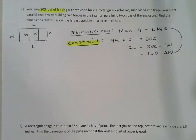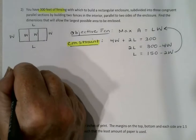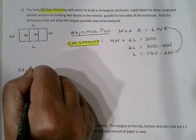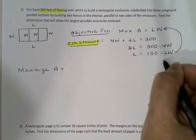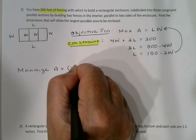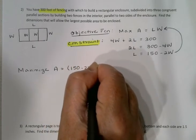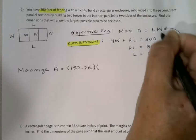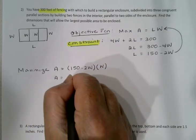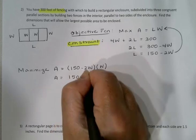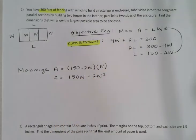We'll plug that back into the objective function. So my goal now is to maximize the area. I'll replace the L with (150 - 2W) times W, giving me an area function of 150W - 2W².